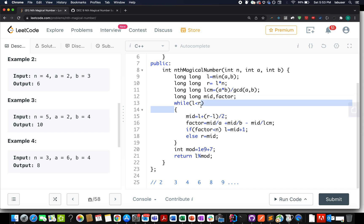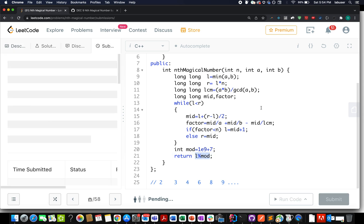Here he has specified a helper method for calculating the GCD. We take two variables, mid and factor. While left is lower than right, typical binary search template, we identify the middle element, calculate the factors using mid by A plus mid by B minus mid by LCM. If factor is less than N, we update low to mid plus 1, otherwise we update high to mid. In the end, we return low modulus mod, pretty simple and straightforward.